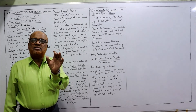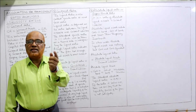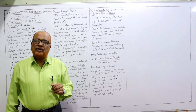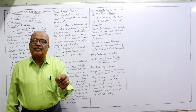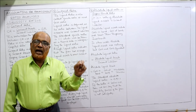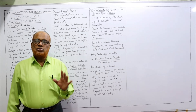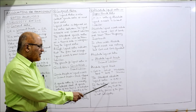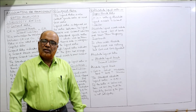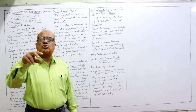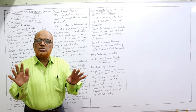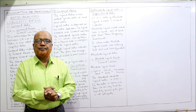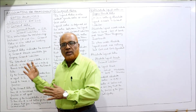The standard absolute liquid ratio is 0.5:1, meaning absolute liquid assets should be half of current liabilities. For example, if current liabilities are 1 lakh, you must have at least 50 thousand of absolute liquid assets. If the ratio is below 0.5, the liquidity position is not satisfactory — a result of 0.2 or 0.3 means the company will find it difficult to make payment of current liabilities on time.